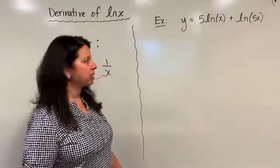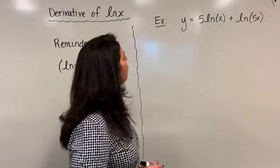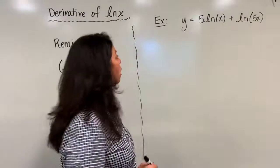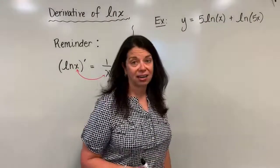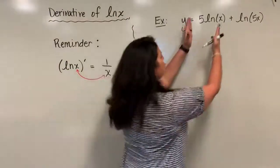So here we go. I have this example here: y equals 5 times natural log x plus natural log of 5x. Okay, so I think about this first. I have two parts to this, so I'm going to tackle part one and find its derivative.